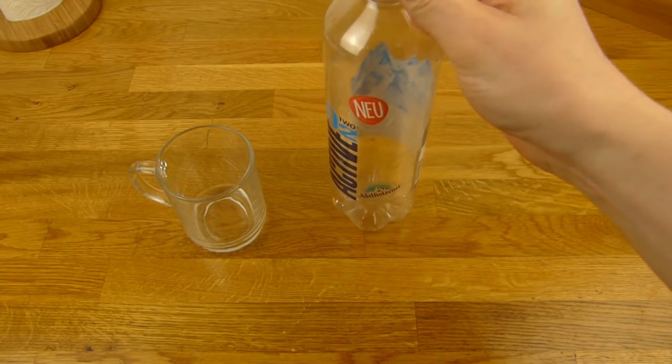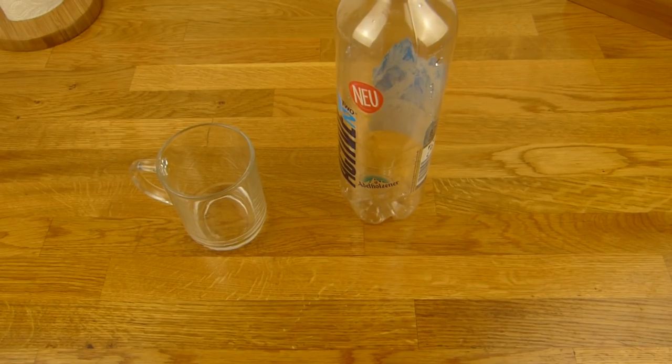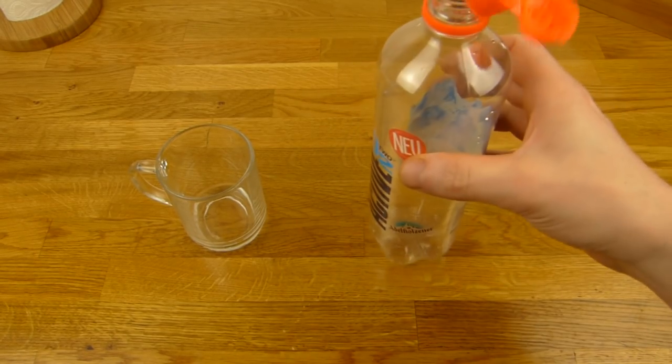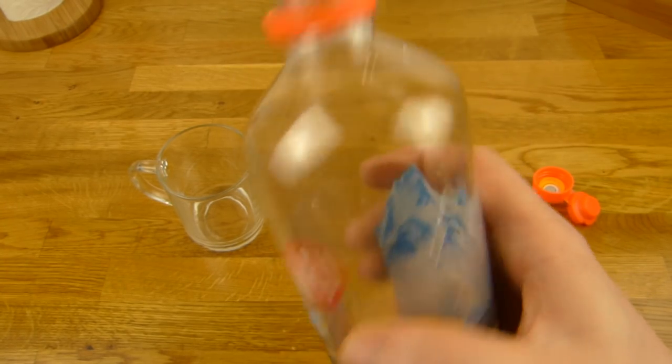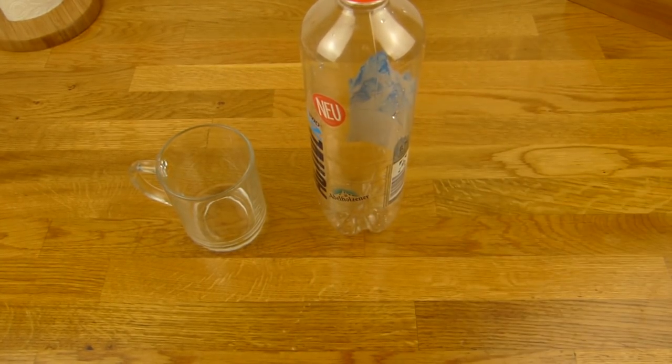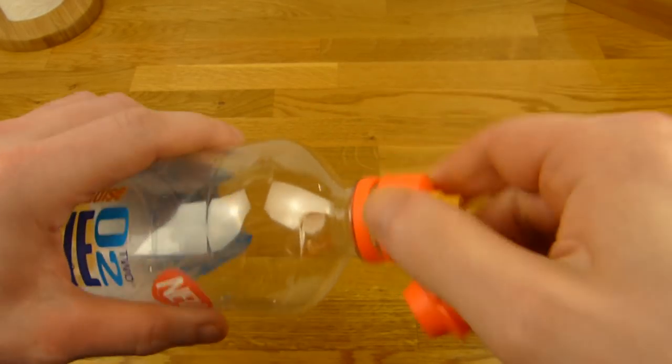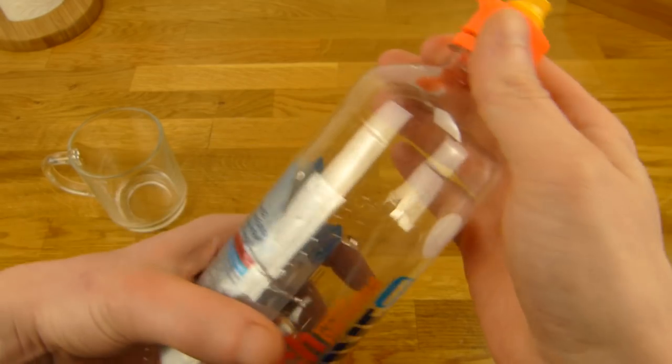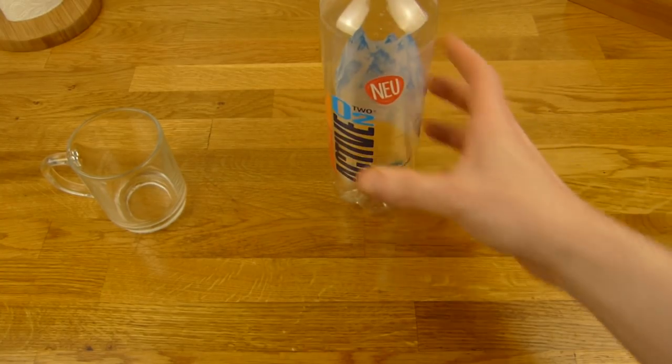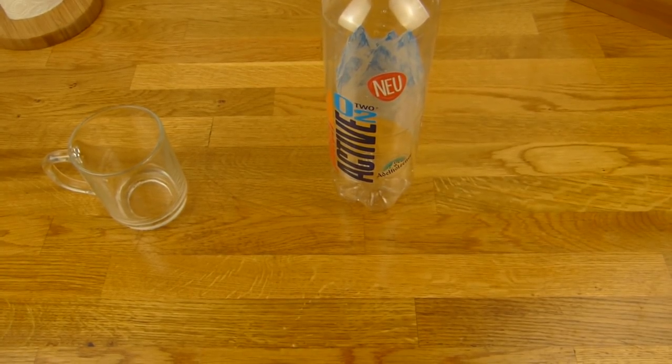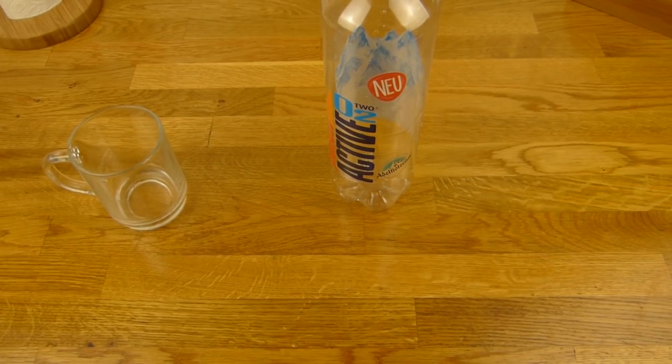Bekommt locker noch Daumen nach oben. Ist ein bisschen teurer als die anderen. Dafür bekommt man eine stabile Flasche. Was ist noch so gut an der Flasche? Hier habe ich im Englischen vergessen. Das Ding knarzt nicht. So wie die anderen Dinger. Das nervt immer. Wenn ihr die irgendwo dabei habt und dann knarzt die Flasche. Das ist hier gut. Das ist eine richtig stabile Plastikflasche. Auch dieser Saugmechanismus, da lässt sich sehr gut drin saugen. Daumen nach oben. Viel Spaß. Bis zum nächsten Video. Tschüss.